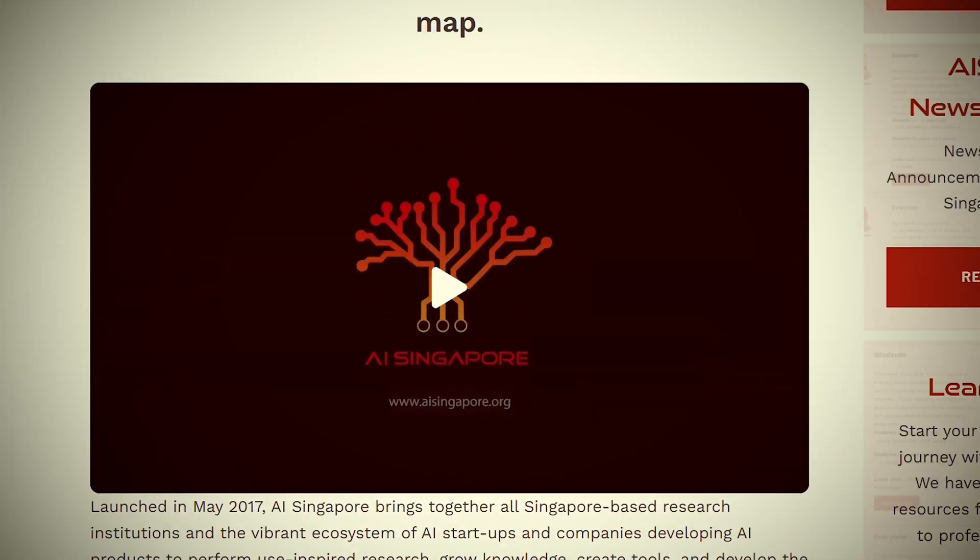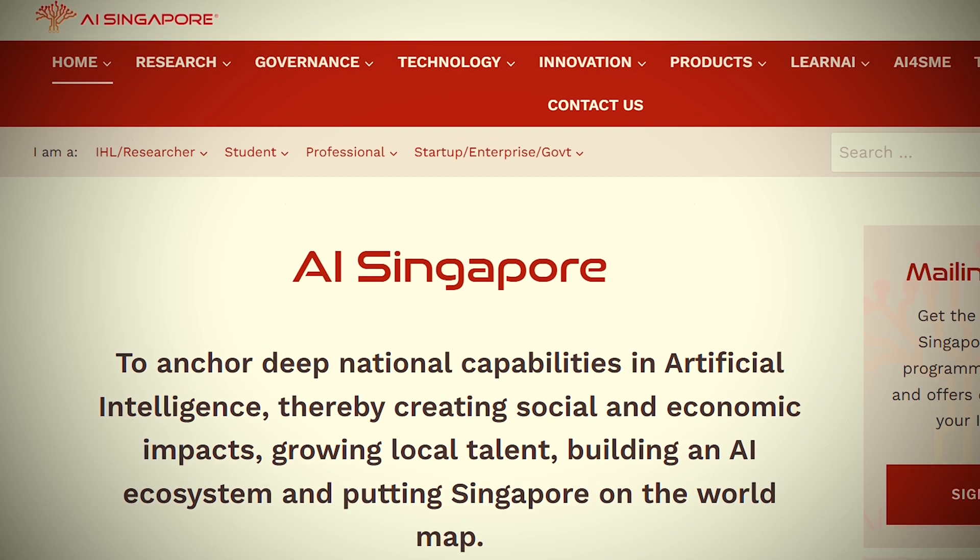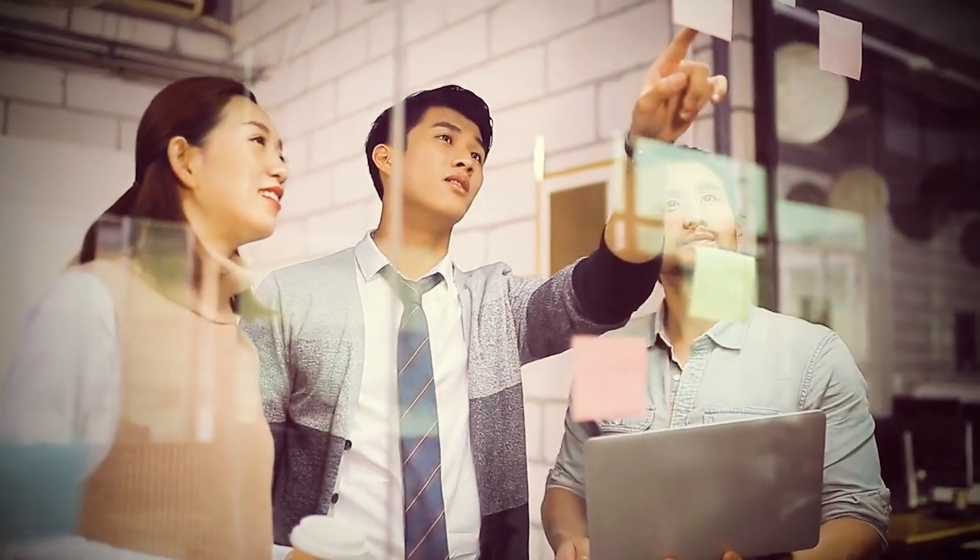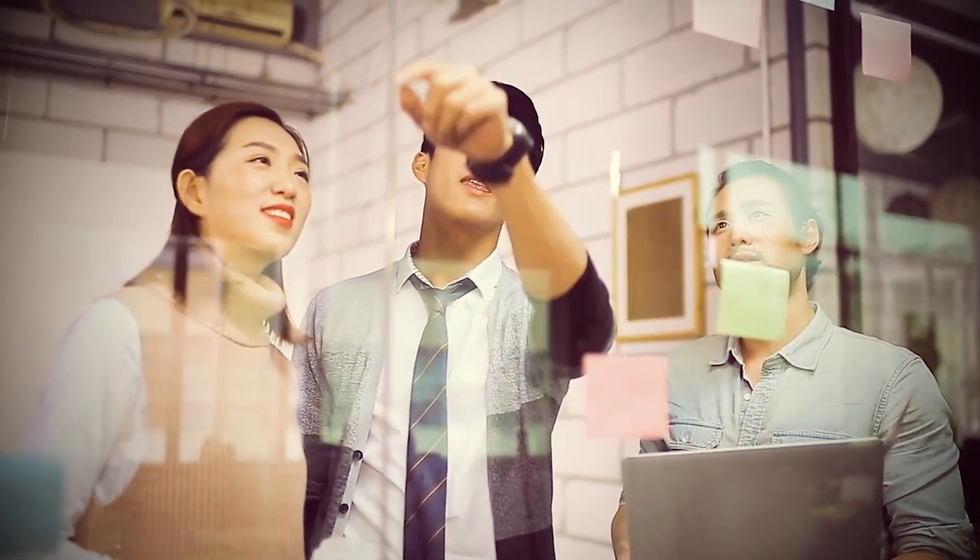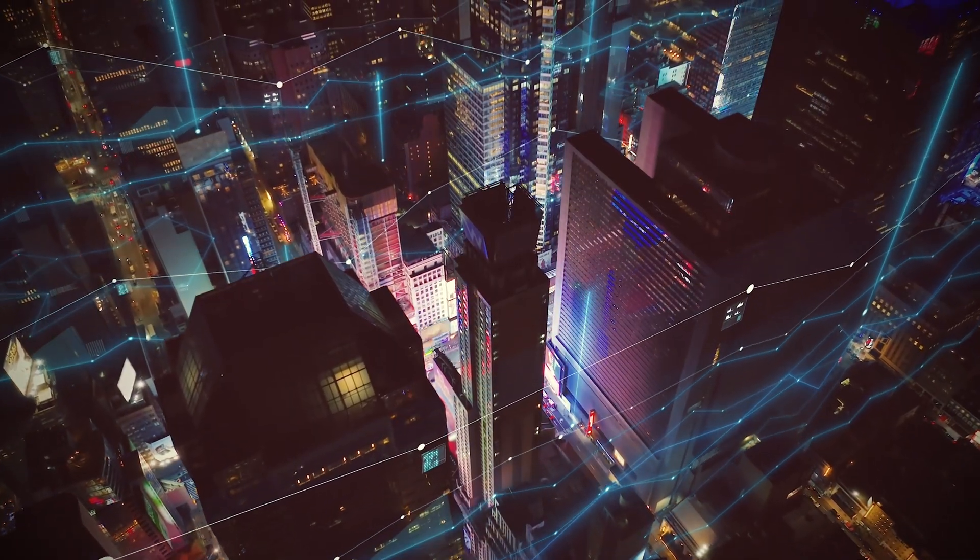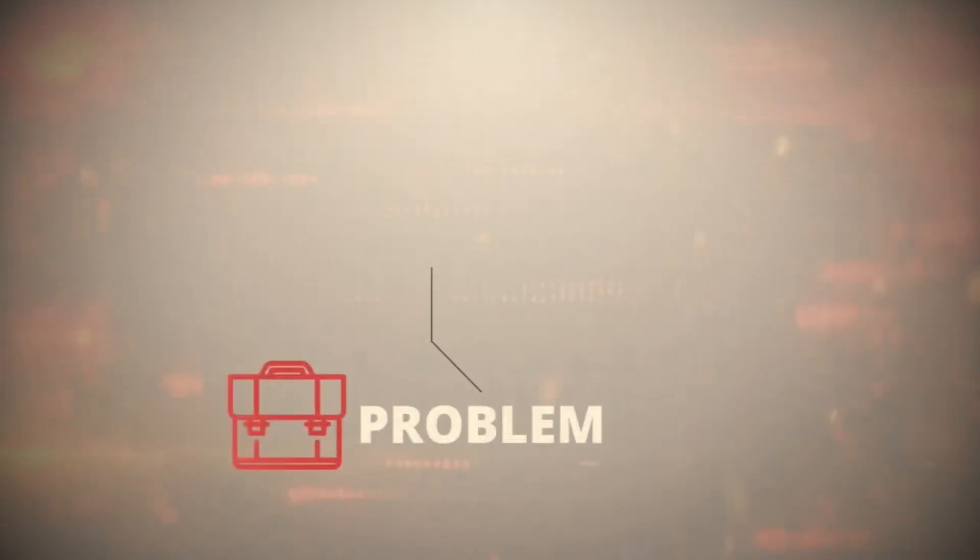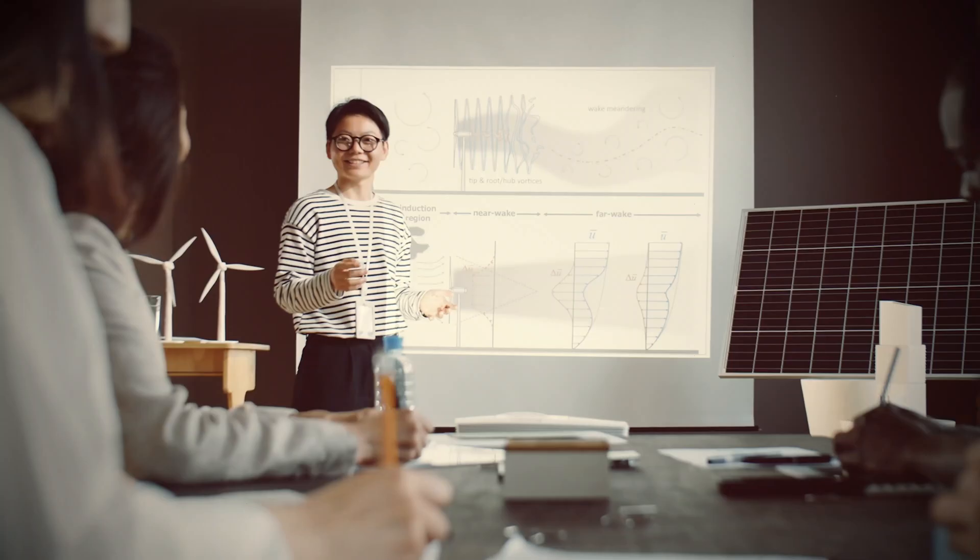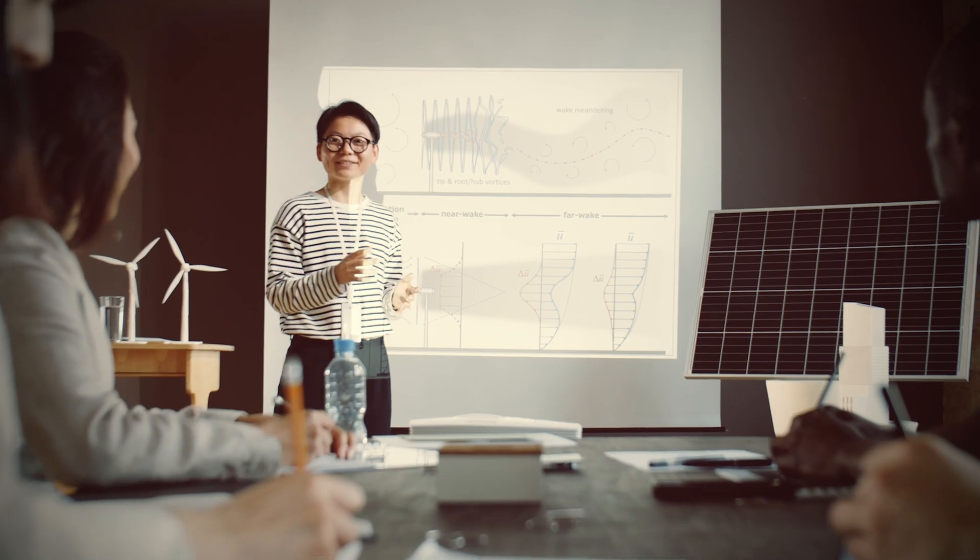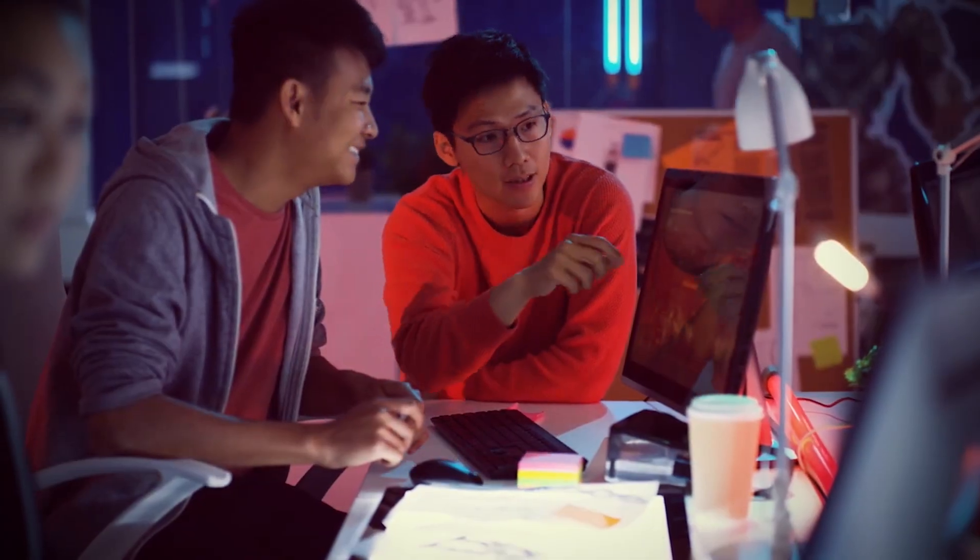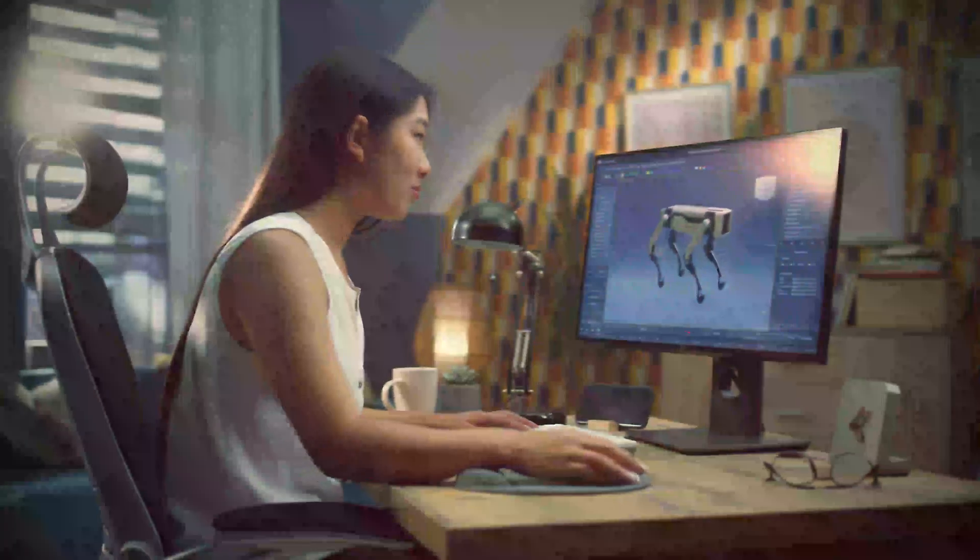To execute this vision, they created a central engine called AI Singapore, or AISG. This national program acts as the critical bridge between university research labs and real-world industry problems. Its flagship program, called 100 Experiments, is brilliant. A company comes to them with a tough business problem, and AI Singapore pairs them with a team of researchers and engineers to build a custom AI solution. It helps businesses adopt AI and gives startups invaluable real-world experience. Singapore got it right, as simple as that.